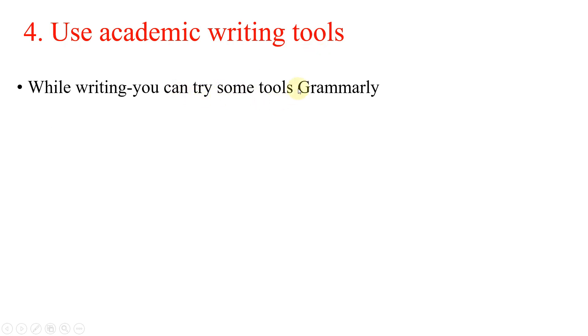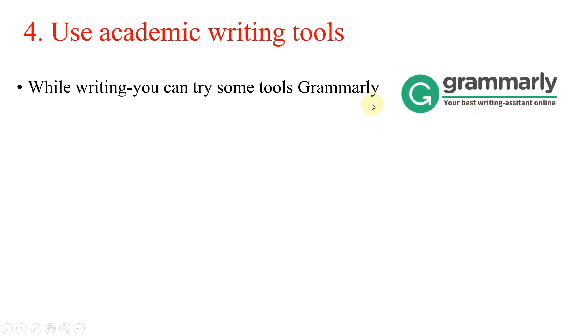The fourth important tip is the use of academic writing tools. While writing, you can try tools like Grammarly, which is actually a helpful writing assistant. It can help you identify punctuation mistakes and spelling mistakes. If you use the paid version it can also give you several suggestions, although I don't recommend using it because then you will become dependent on it and may be unable to write without it. Just use the free version to find common spelling and punctuation mistakes.